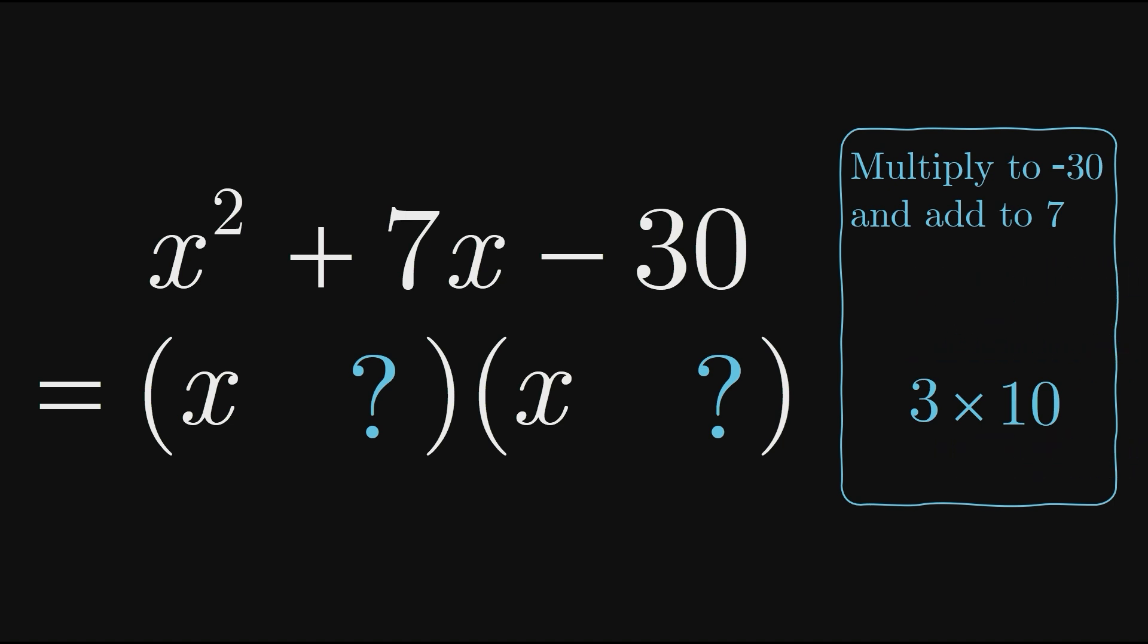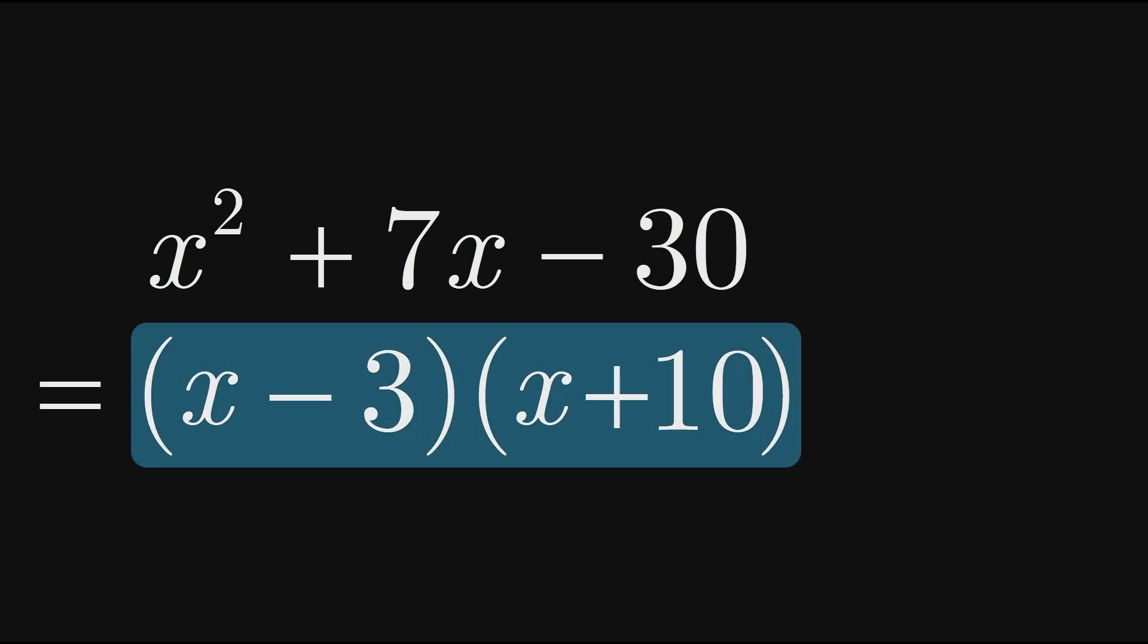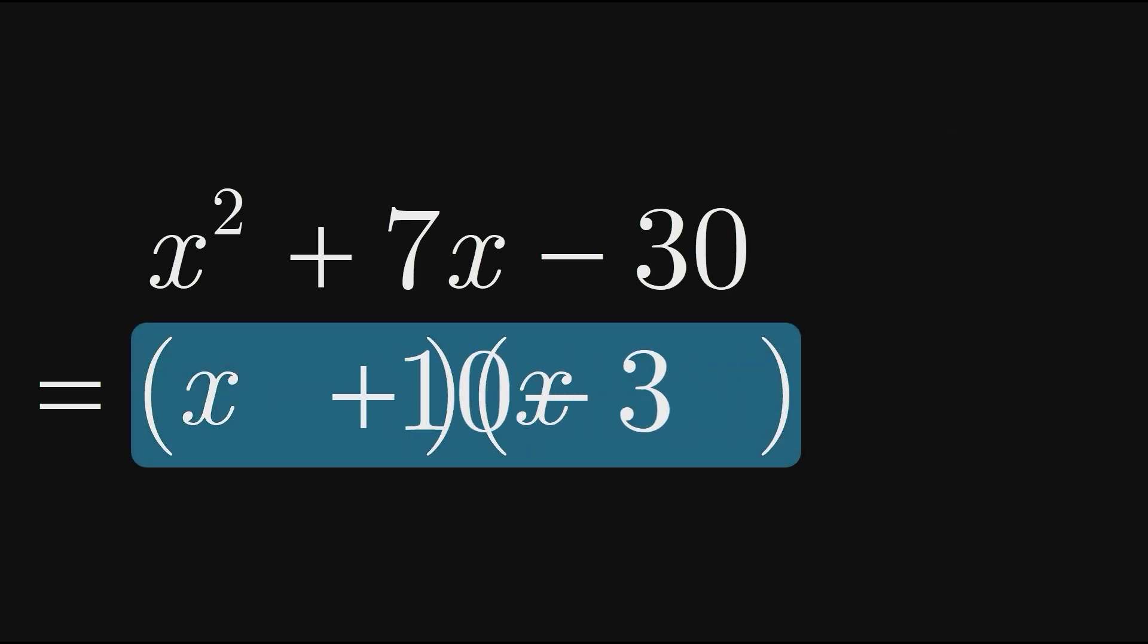3 and 10 is the pair we want, since if we make the 3 negative, the two values multiply to negative 30 and add to positive 7. Therefore, our factors are x minus 3 and x plus 10, which we could also write in the reverse order.